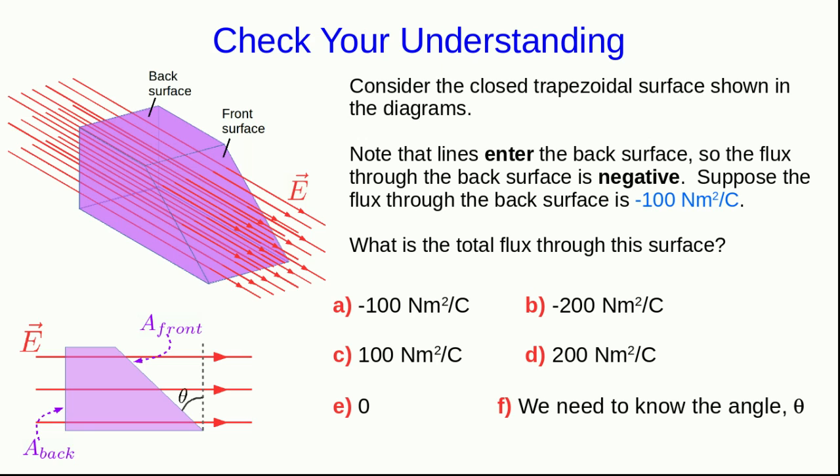So all of the rules we know for informal flux still have to apply for our formal flux definition. Note in particular that all of the field lines that enter the back surface also go on to exit the front. And so all of the lines go in and out, that means the total flux must be zero.